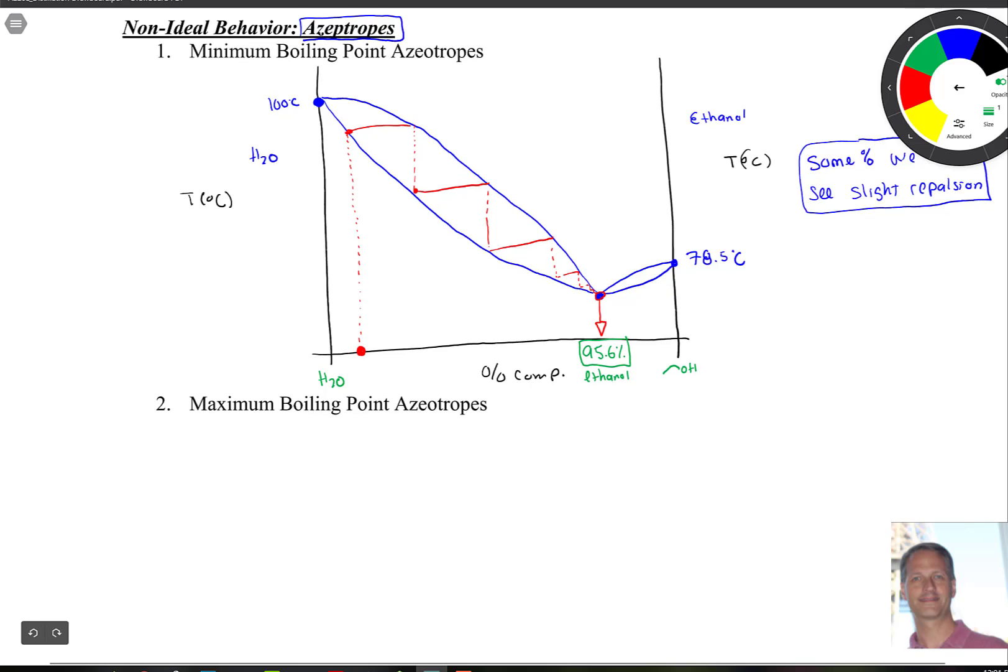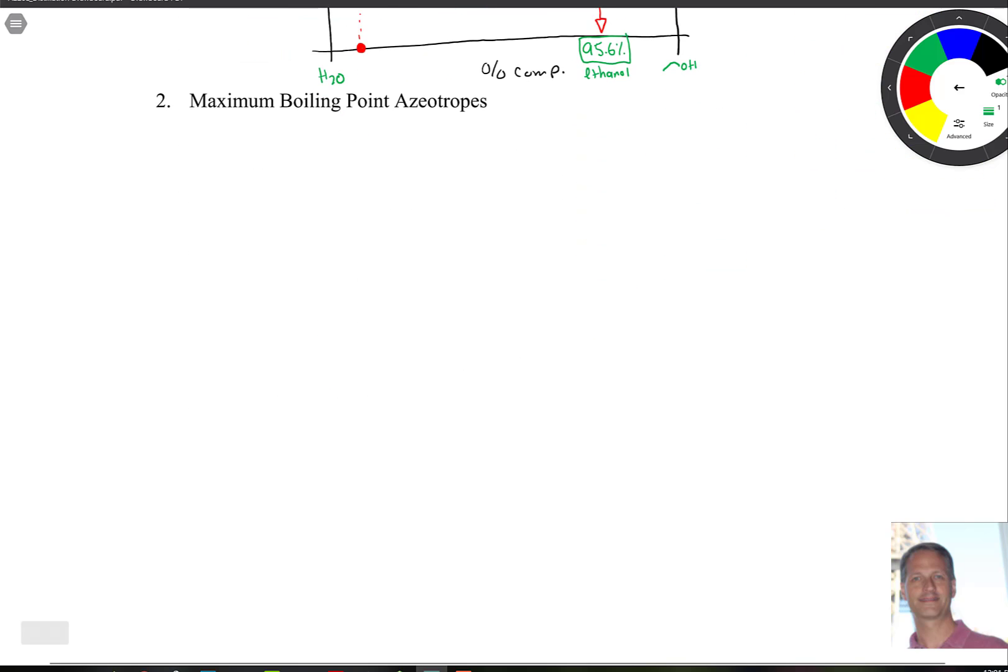The other type of azeotrope is a maximum. So the maximum boiling point azeotrope, you can probably see where I'm going with this. Minimum has some temperature that's below what you would expect it to be. So a maximum has a temperature, a boiling point that's above what you would expect it to be.